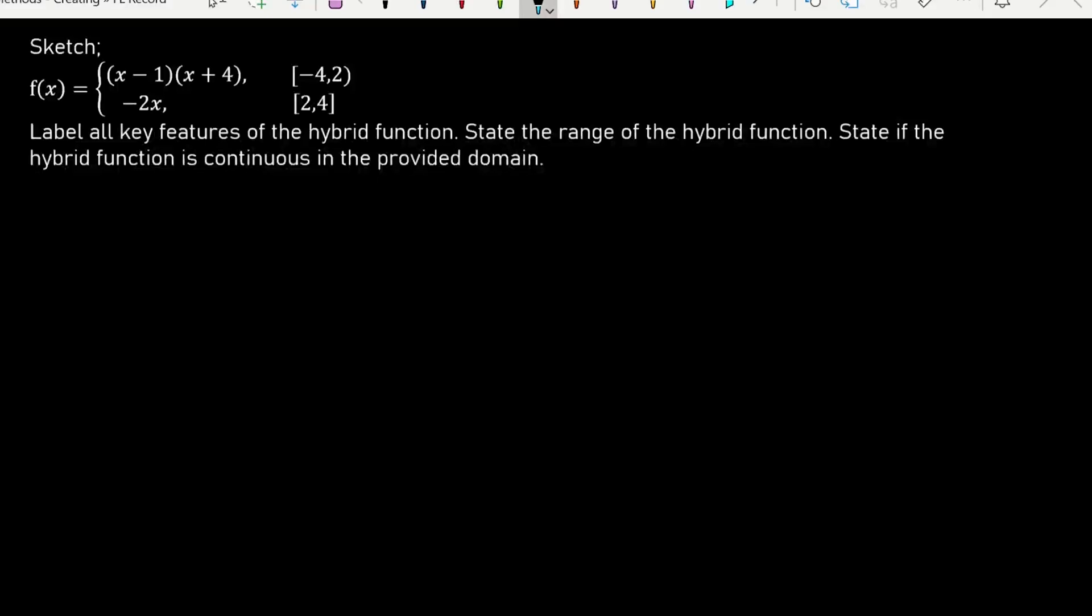So we're being asked to sketch a hybrid function in this case, and we're asked to label all key features and state the range of the hybrid function and if it's continuous in the domain. So the first thing I notice is that it's broken up into two different functions. Here we've got a quadratic in its root form, and here we've got a linear function, and each of those have their own separate domains.